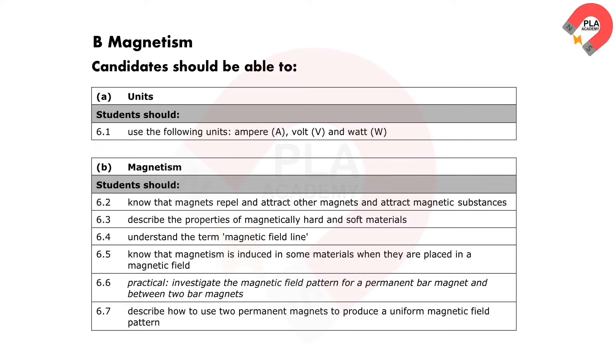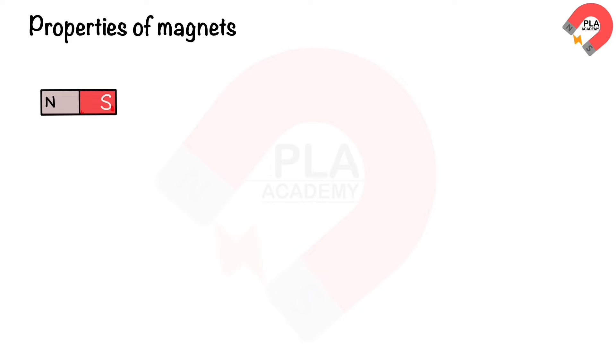Candidates are expected to have a thorough understanding of the syllabus details outlined in the accompanying figure. Properties of magnets: magnets have two poles, a north and a south, at the ends of the magnets. Magnetic forces are strongest at the north and south poles.